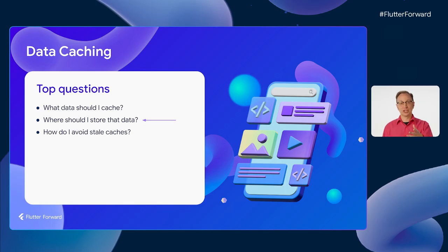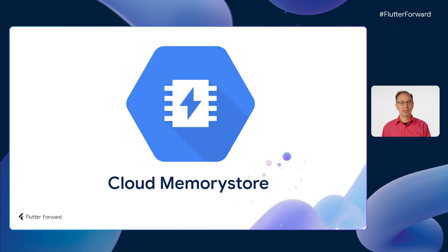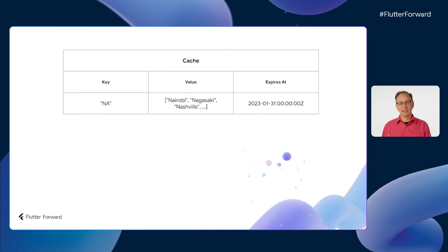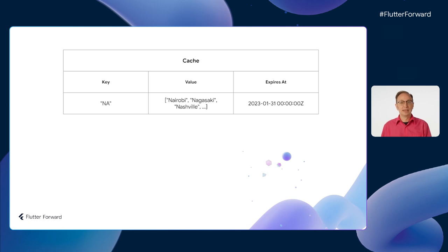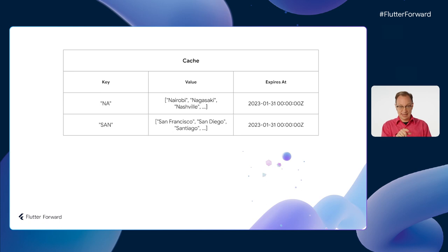Now that you know what to cache, you need a place to put it that offers faster retrieval than your database. On Google Cloud, I recommend using Memorystore, which offers both Redis and Memcached — both fast, in-memory key-value stores. For my city lookup service, if the user types S-A-N, my code will query the database and find matching cities like San Francisco, San Diego, and Santiago. It then adds a record to the cache where the key is 'SAN' and the value is that list of cities.